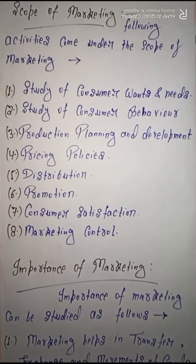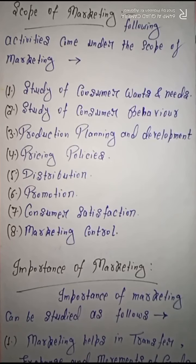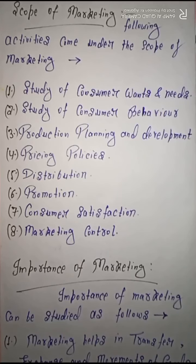The last scope of marketing is marketing control. Different types of marketing activities need to be controlled. When you want to obtain the results of marketing activities, the marketing control function ensures those results. On the basis of this function, you can answer what results you will get from performing different activities, and this is followed with the help of the marketing control tool. This also comes under the scope of marketing.